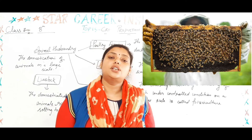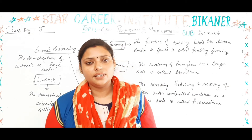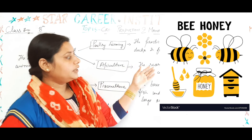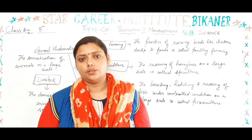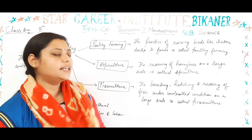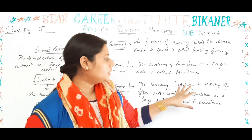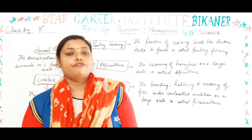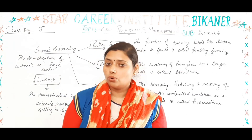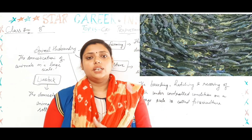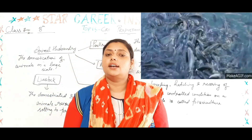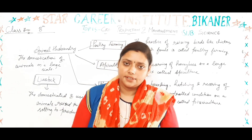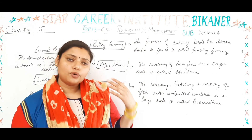The second branch is apiculture, which means honey bee rearing. Honey bees are reared on a large scale so that we can get honey. The rearing of honey bees on a large scale is called apiculture. Next is pisciculture — the breeding, hatching, and rearing of fish under controlled conditions on a large scale is called pisciculture.